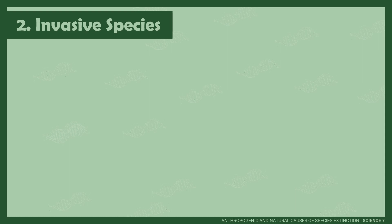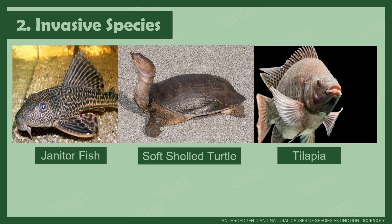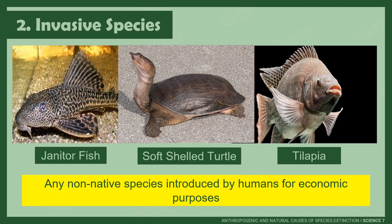Second on the list is invasive species. These are any species introduced by humans in a habitat where they are not native. The purpose of the introduction is for economic relief. Janitor fish, soft-shelled turtles, and tilapia are some examples of invasive species. They compete with the same resources as the native species, causing them to reduce in population or to become extinct.